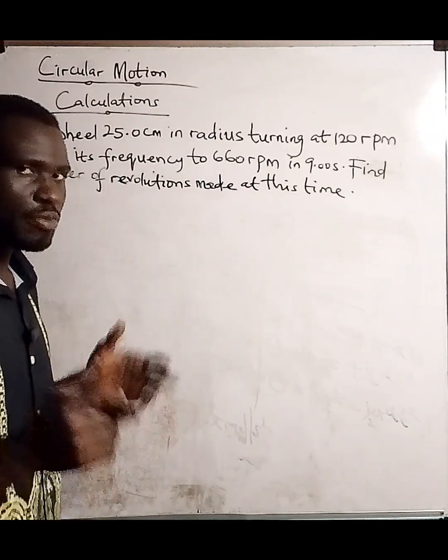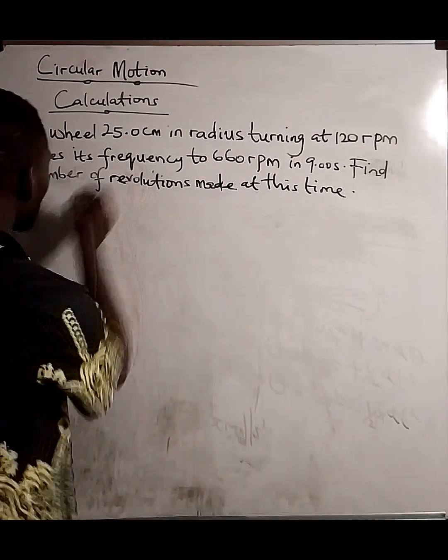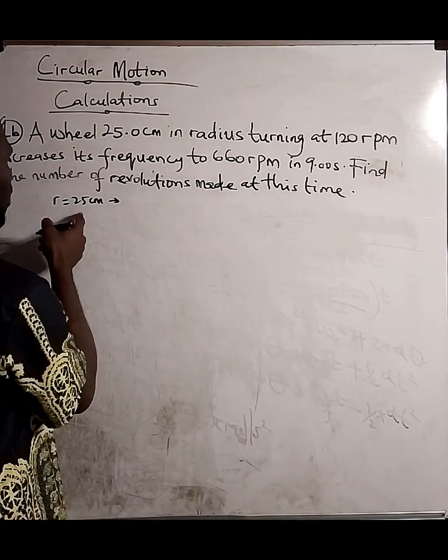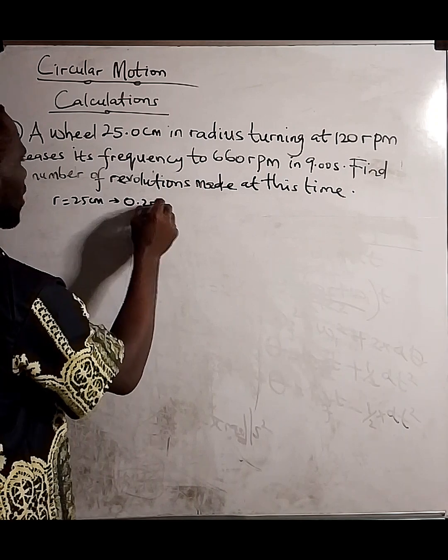Now, this question is very simple. Quickly, let's bring out our parameters. So, first of all, we have a radius, which is 25 cm. The radius in meters divided by 100 will give us 0.25 meters.